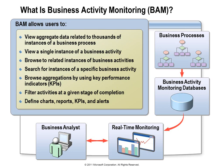BAM allows a user to view data at a very high level, looking at aggregations that summarize thousands of transactions, and also drill all the way down into a single instance of the business process. It gives users a way to present data in whatever format is most appropriate, whether charts, reports, or updates to key performance indicators. You can even configure BAM to send out alerts when certain conditions are met — for example, a notification if the average duration of an order process exceeds a given threshold.